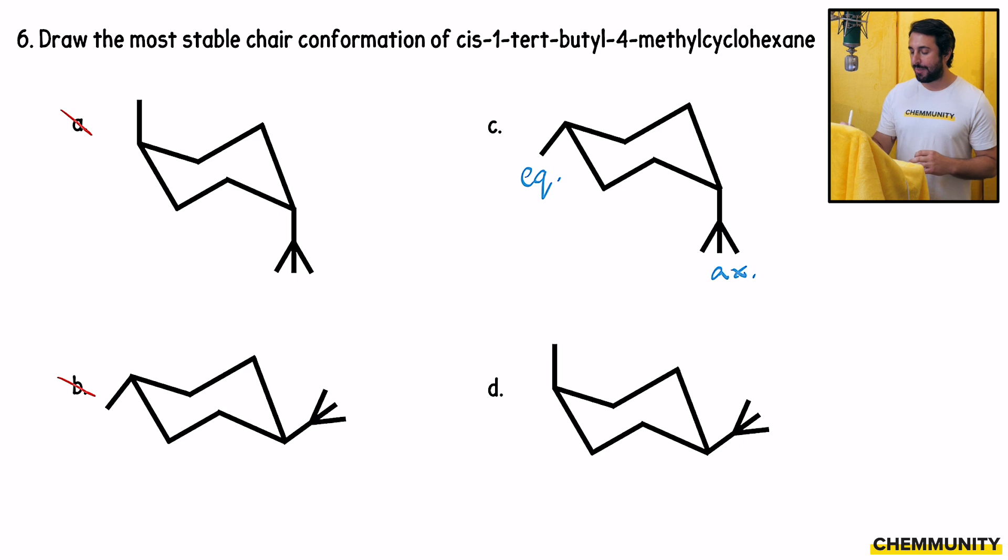Over here for option D, the methyl group is axial and the tert-butyl group is equatorial. So that means that it is now the methyl group that is making the unfavorable diaxial interactions. So this is an example of steric hindrance. We want to minimize steric hindrance.